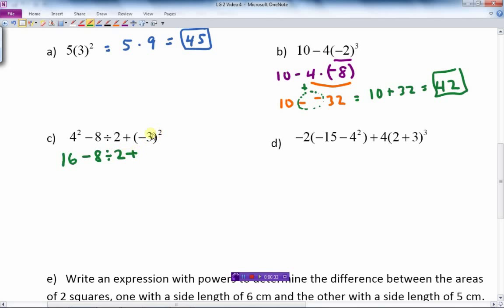Negative 3 squared is going to be positive 9 because a negative times a negative is positive 9. We've done the brackets and exponents. Now we go to divide and multiply. There's a division right in the middle there, so 16 minus 8 divided by 2 is 4 plus 9.